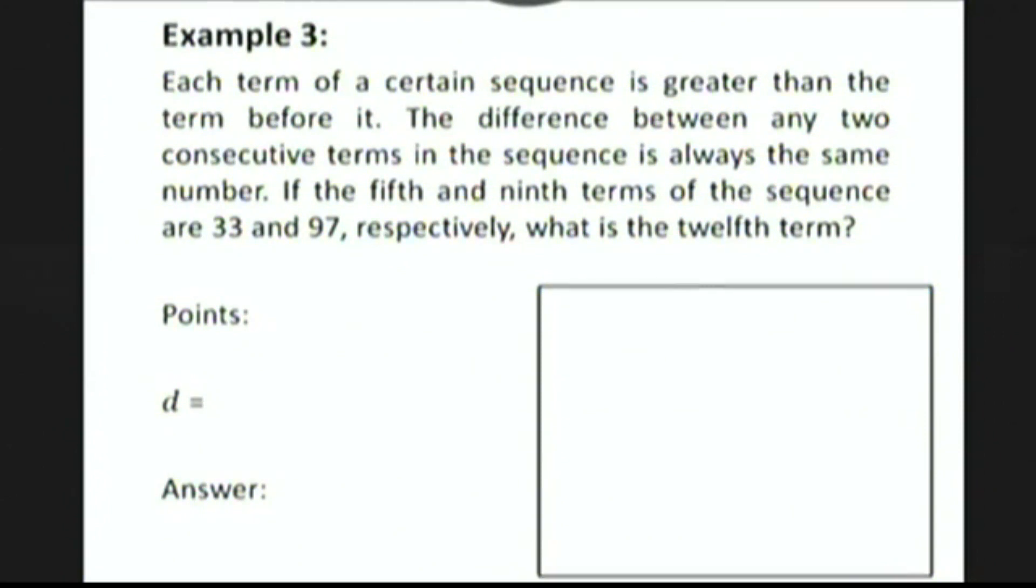So as we just did, I'm going to identify the terms of the sequence with points on a line. Well, the fifth term of the sequence is 33 and the ninth term of the sequence is 97. So we can get the common difference of the sequence by finding the slope of the line passing through those two points, which we get by computing 97 minus 33 over 9 minus 5. You can do this right on your calculator to get that the common difference is 16.